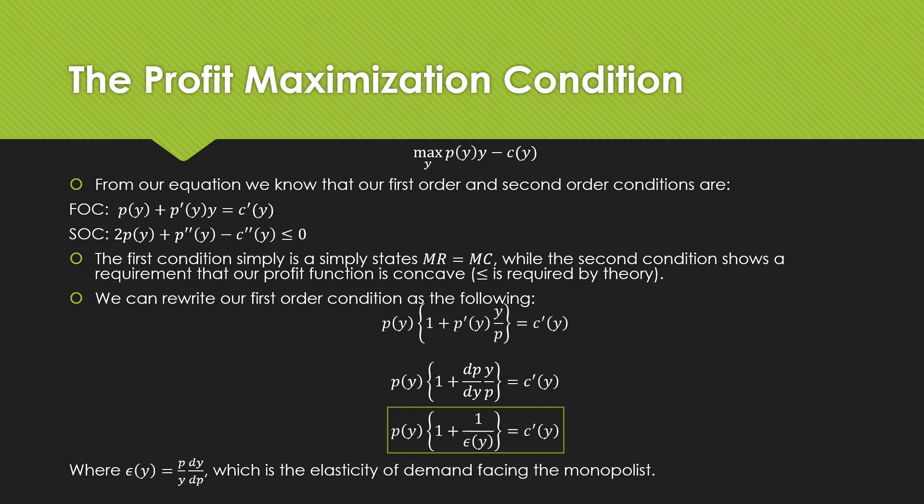Doing some more rearranging, we get this result in the box where we have our price, which is determined by the output produced, times one plus one over epsilon as a function of output, which must equal the marginal cost, where this epsilon term is the elasticity of demand facing the monopolist.